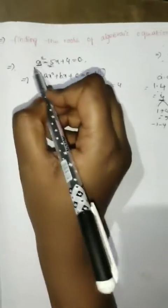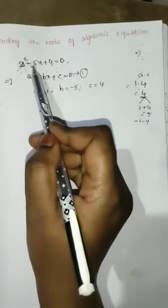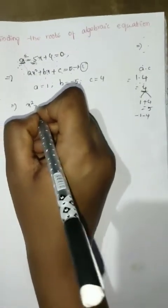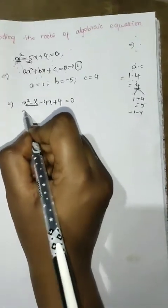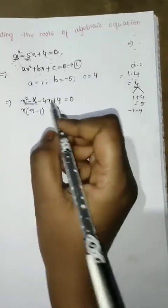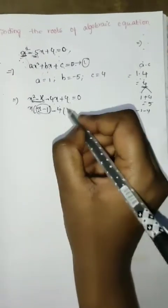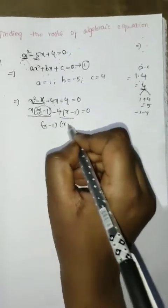Similarly, with the signs: minus 1 and minus 4. The given equation x squared minus 5x plus 4 can be written as x squared minus 1x minus 4x plus 4 equals 0. From the first two terms, take x common to get x minus 1, and from the last two terms, take minus 4 common.